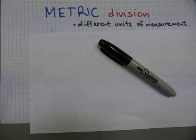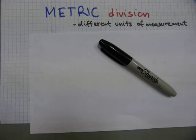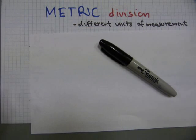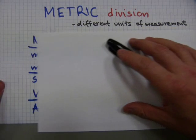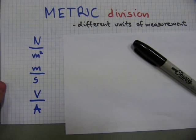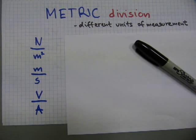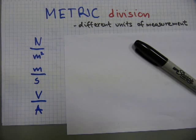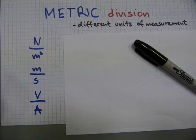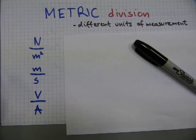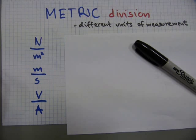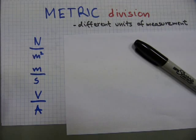In this video I'll show you how division is done in the metric system using amounts with different units of measurement. What do I mean by different units of measurement? Sometimes you have newtons or meters or volts, and the accuracy of your calculations is absolutely affected by the unit of measurement that follows the amount.